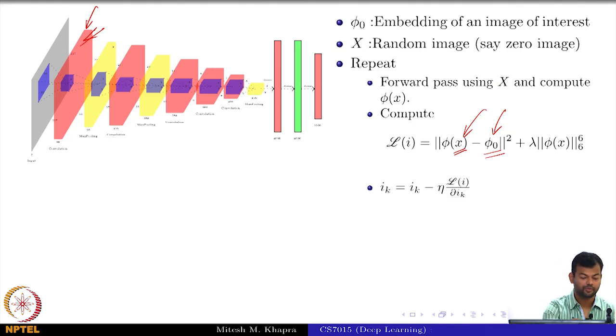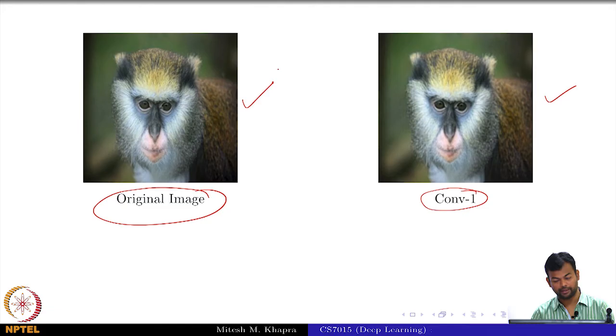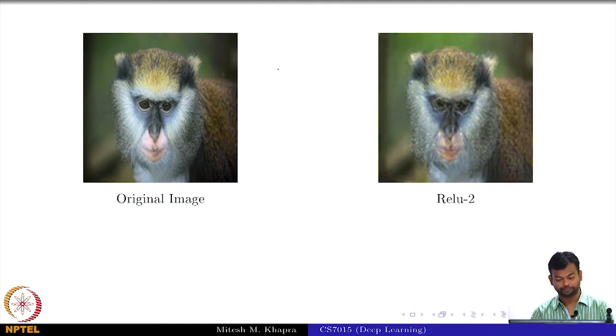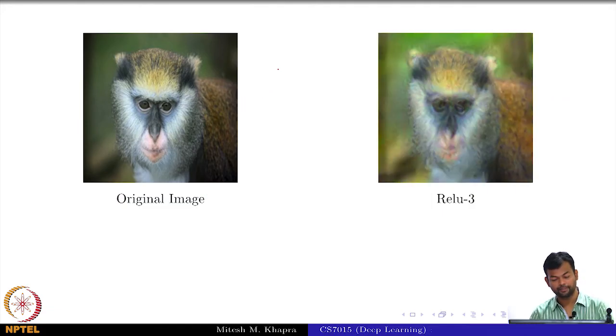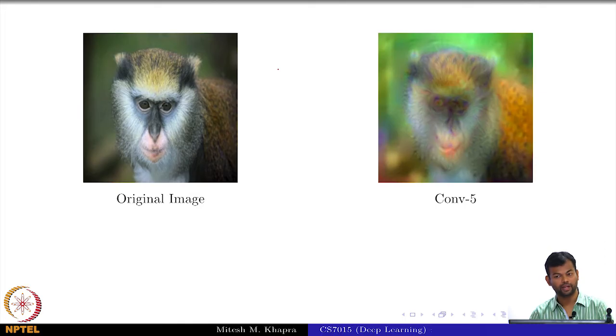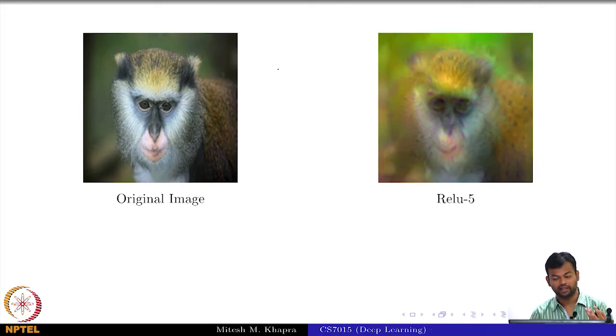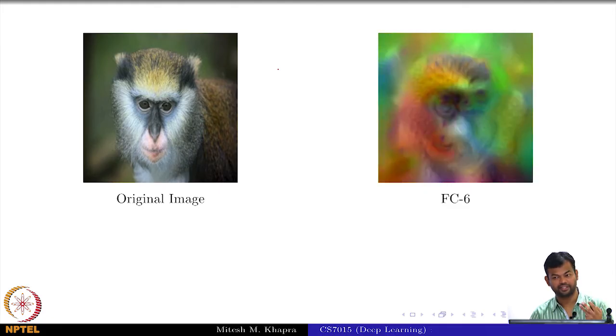The second image that I showed you was when I was trying to map this embedding and the last image that I will show is when I was trying to map these two embeddings. My objective function was to create an image such that this embedding of the created image is the same as this embedding of the original monkey image. As you can see, as I keep going ahead I get more and more abstract reconstructions.